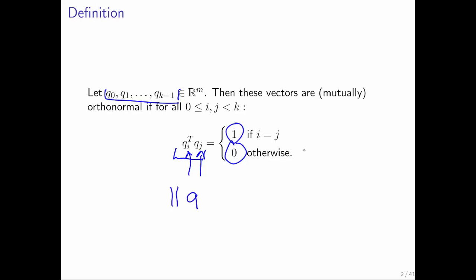Remember that the length of a vector is equal to the square root of the dot product of that vector with itself. Therefore, if the dot product of the vector with itself is equal to 1, what we're really saying is that that vector has length 1.